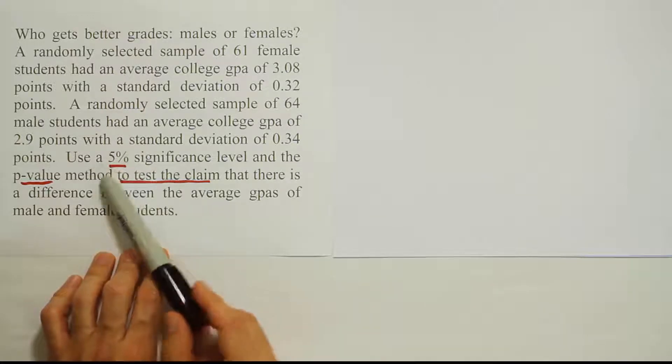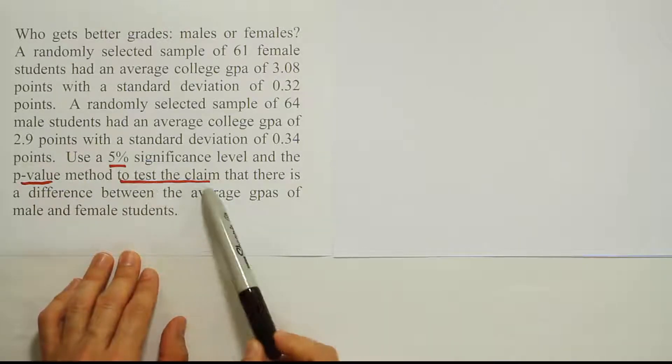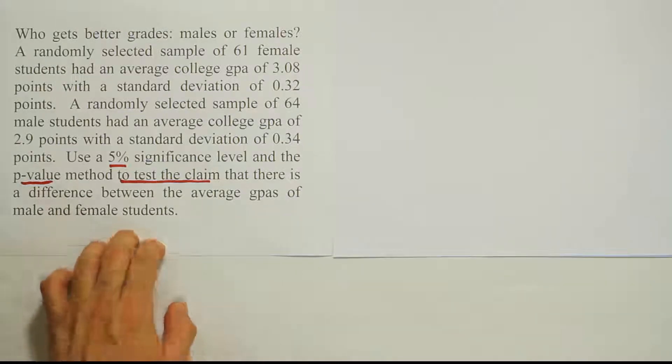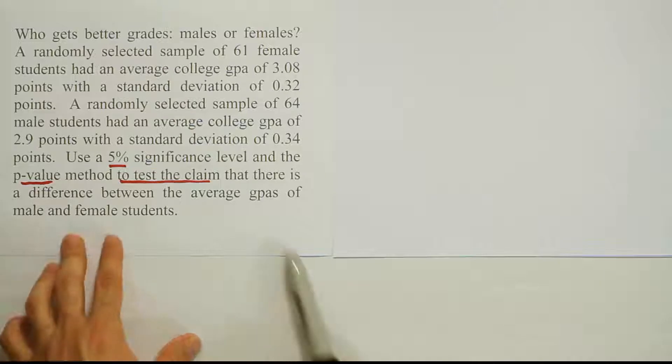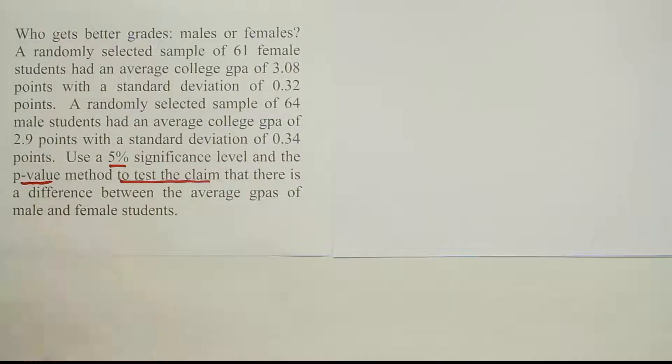Let's first notice what I've underlined here. They ask us to use a 5% significance level, use the p-value method to test the claim. So to test the claim are keywords telling us it's a hypothesis test, and we're testing for the difference between average GPAs. The other thing I want to notice is that they have large sample sizes for these two samples. It's two separate groups being sampled, so it looks like I'm dealing with an independent z-test comparing two independent populations' means.